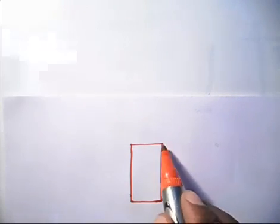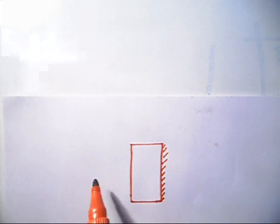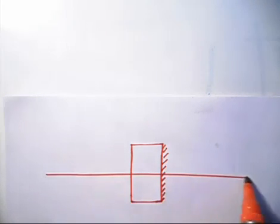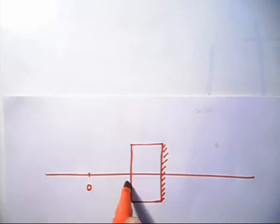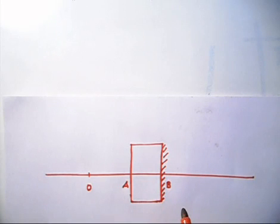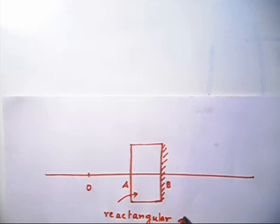This surface is basically silvered, which means this surface is acting like a mirror. There is a principal axis something like this. There is an object O — let us call this object O. This point is A, and this point is B. Now, question says: one face of a rectangular glass slab — this is a rectangular glass slab — and the thickness is given. Thickness of this slab is 6 centimeters.